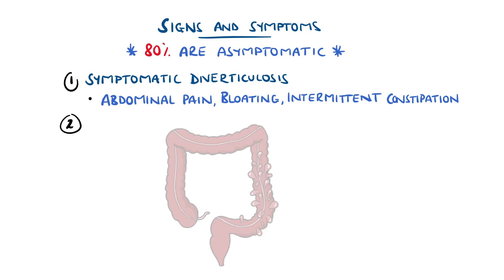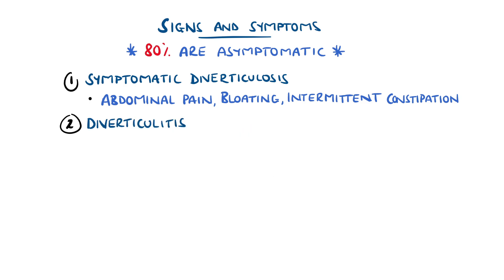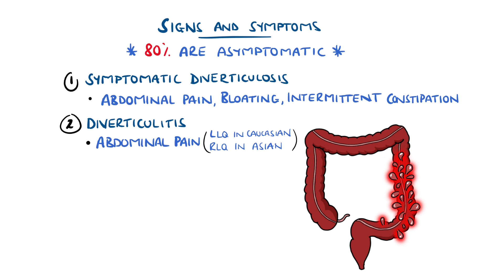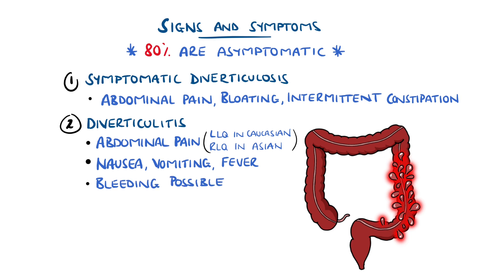Diverticulitis is when the diverticula become inflamed, which tends to feature pain in the left lower quadrant in Caucasian populations, and right lower quadrant in Asian populations. There may also be nausea, vomiting, fever, and in some cases, bleeding.